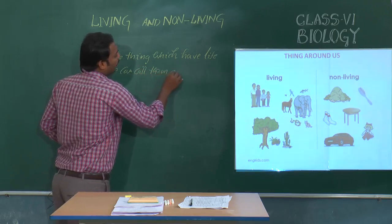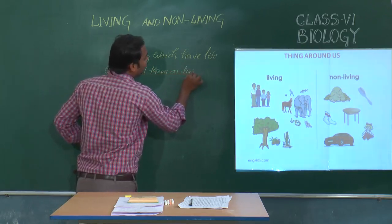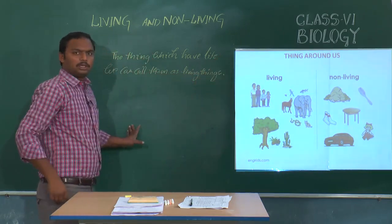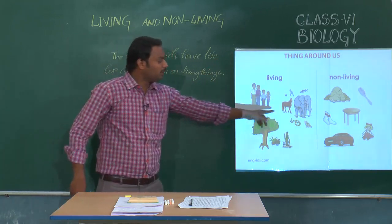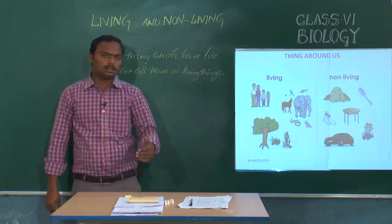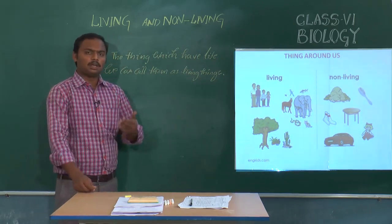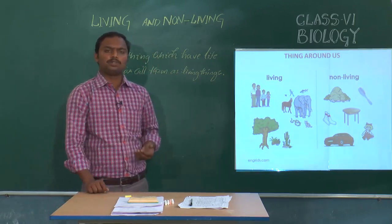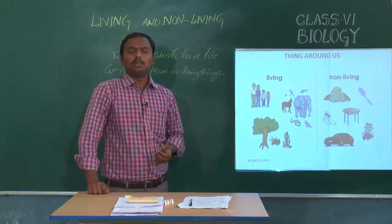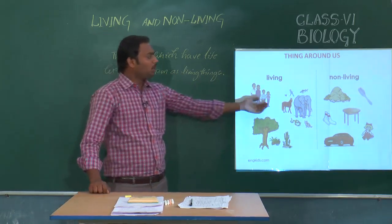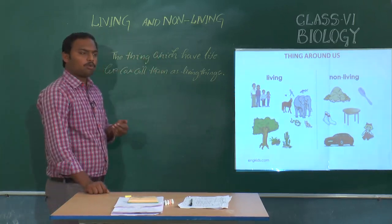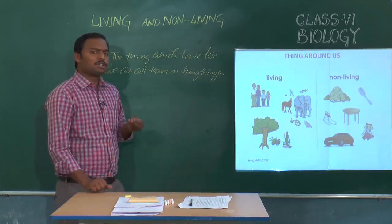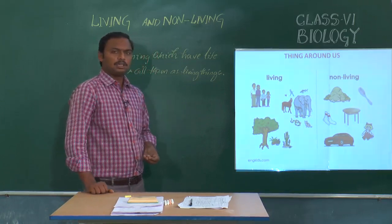Human beings, animals, birds, and plants are all categorized under living things. At your home you might have also observed cockroaches, and you might have observed a lizard on the wall — these are all considered living things. So let us see what properties and characteristic features make them living things.